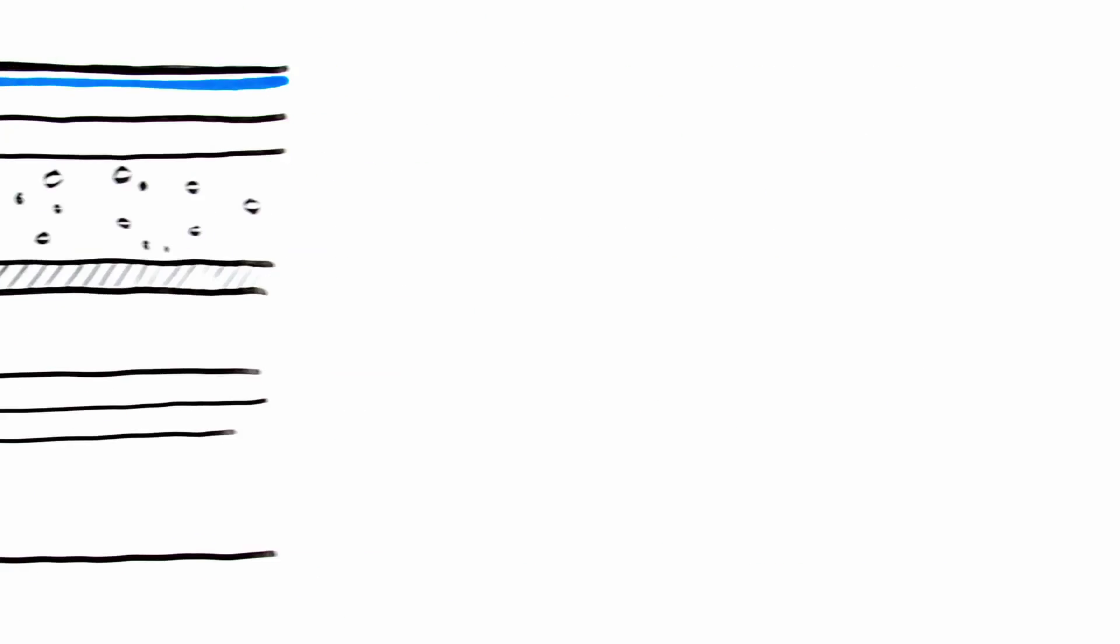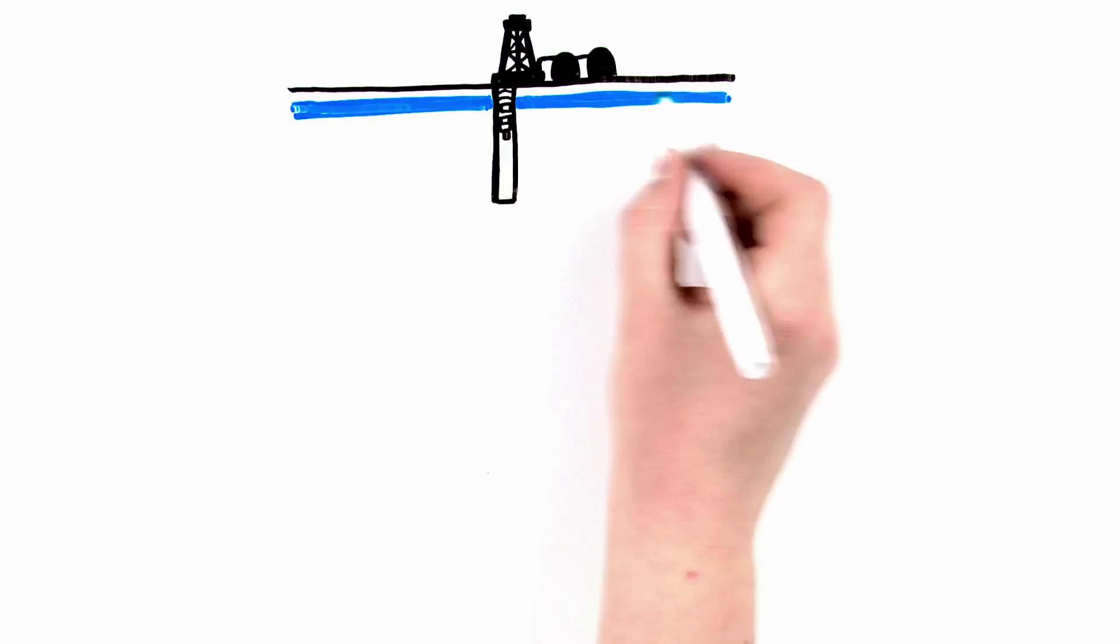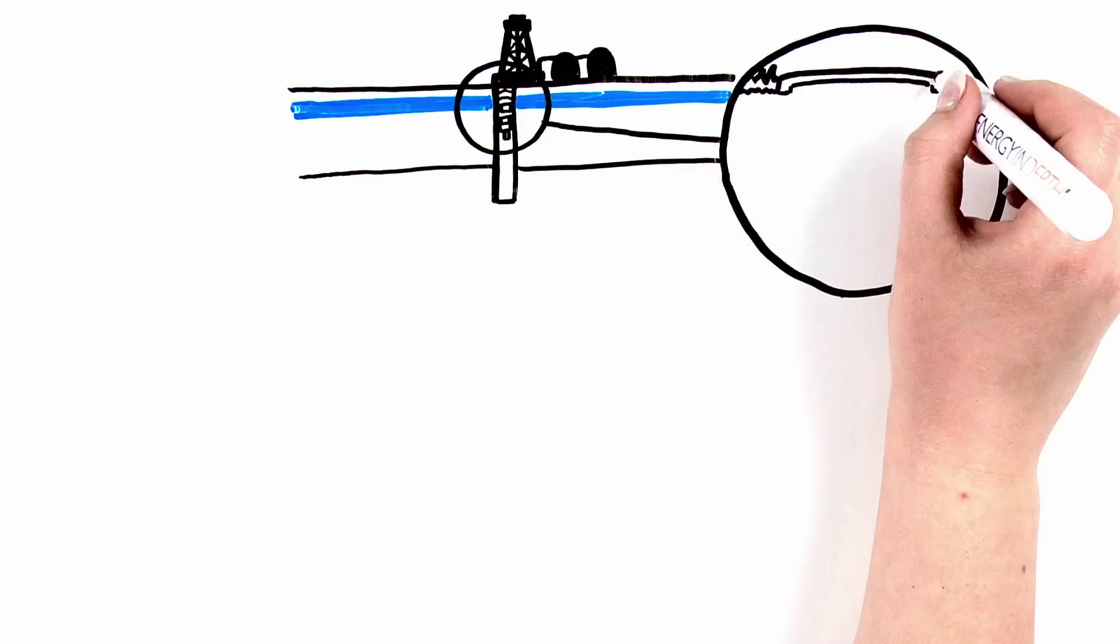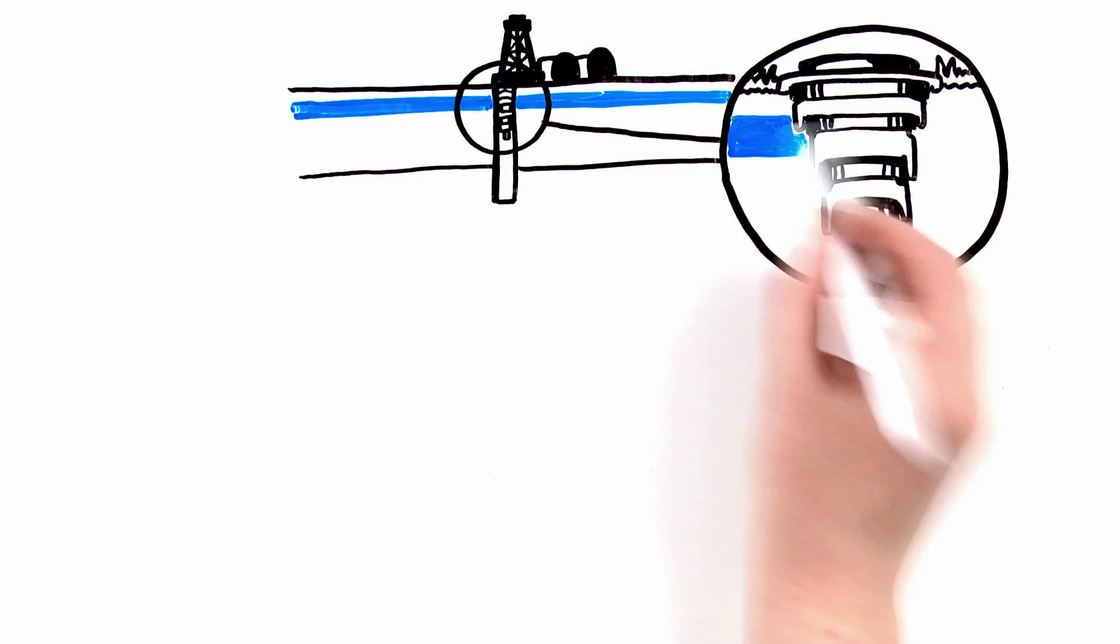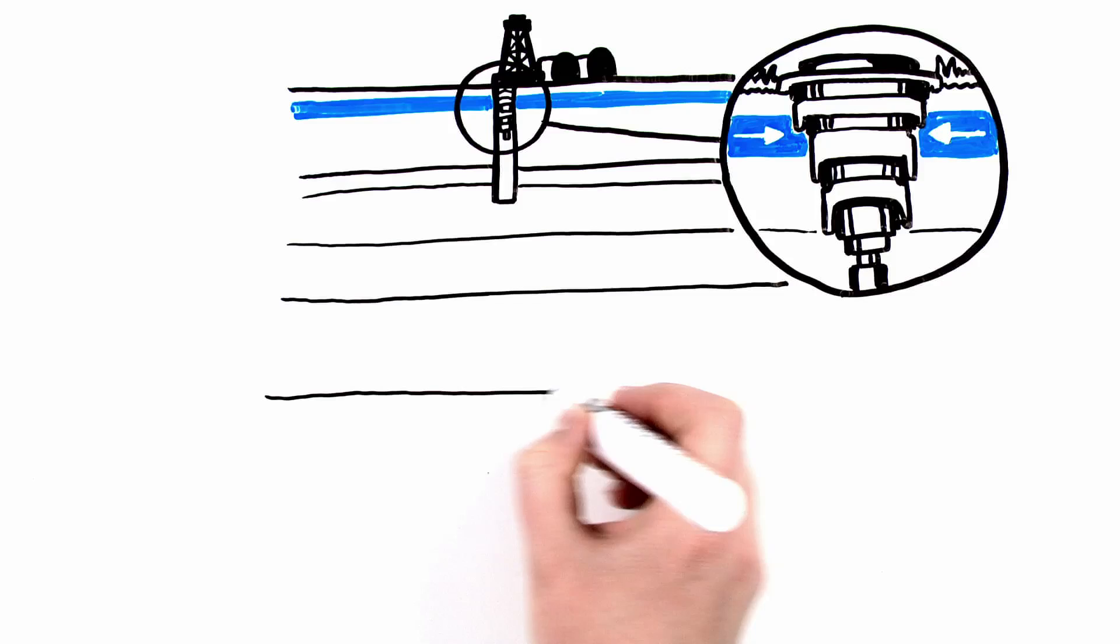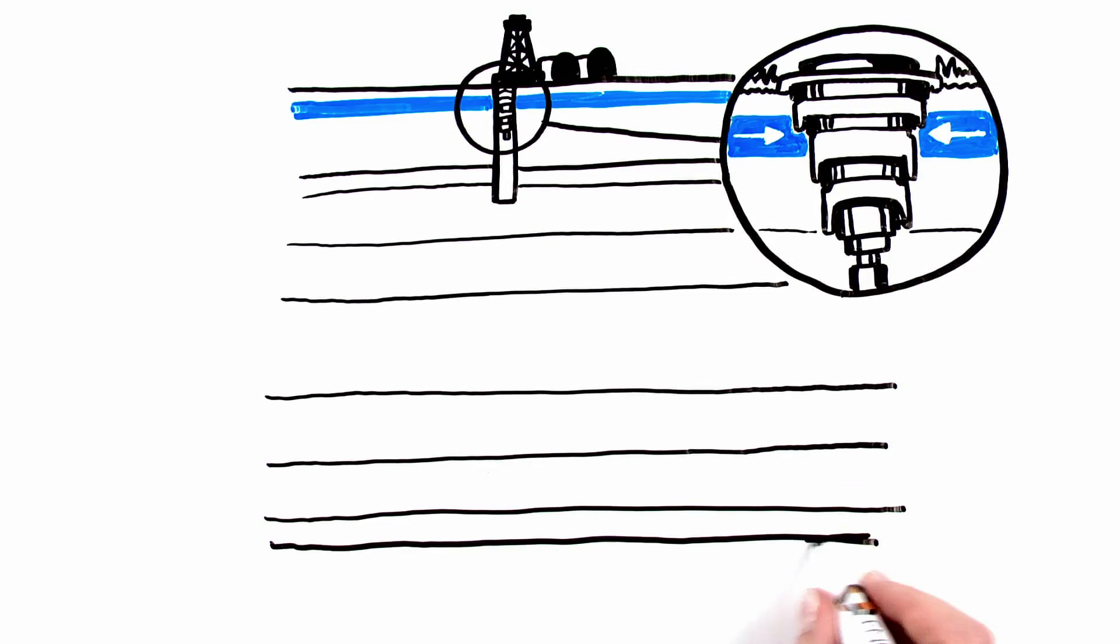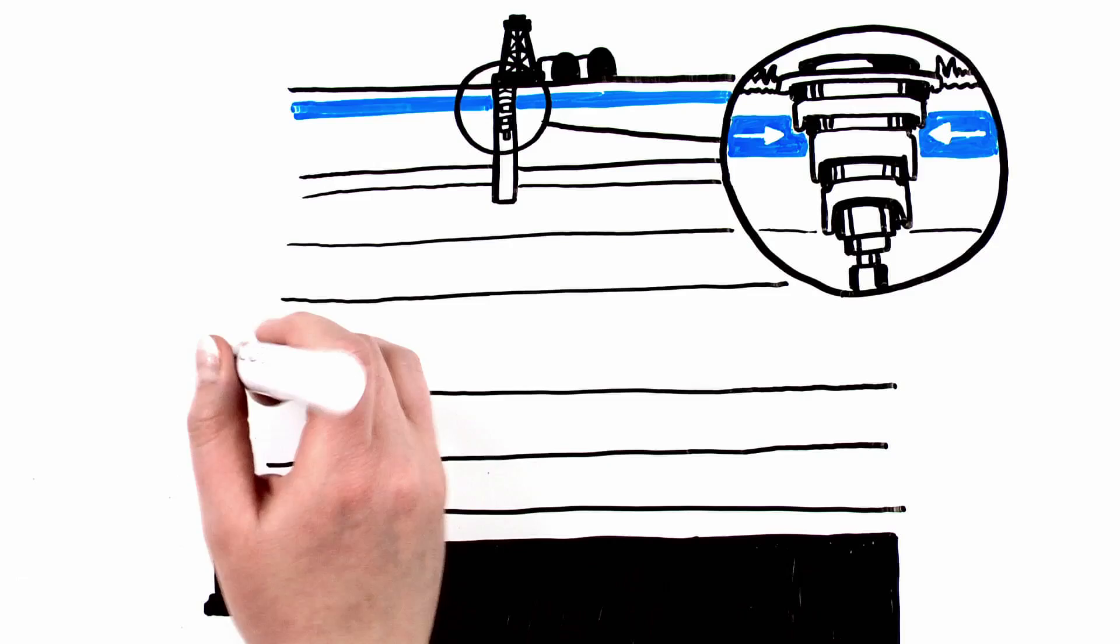Before fracking can begin, a well is drilled through multiple layers of rock. During this process, the wellbore is cemented and cased to seal it off from shallow groundwater. While usable groundwater sources are typically located near the surface at a few hundred feet, these shale formations are thousands of feet beneath the surface.